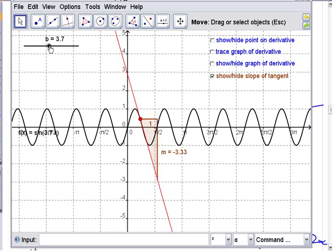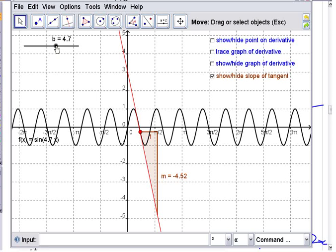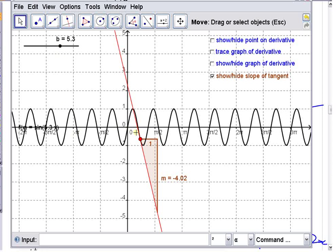As I compress this thing, what's happening to the slope at the steepest part here, right here? What's happening to the slope at the steepest part?